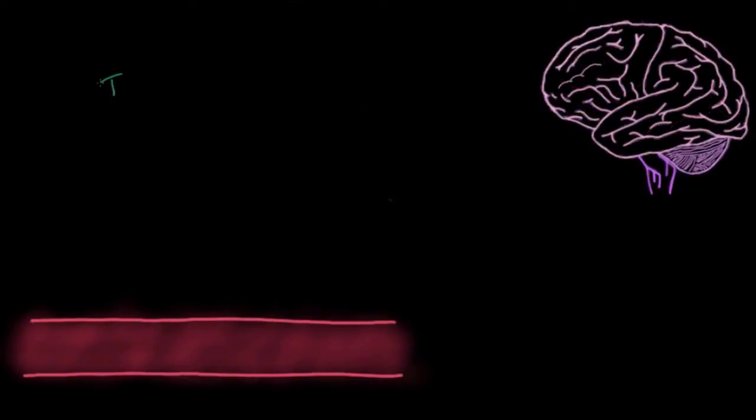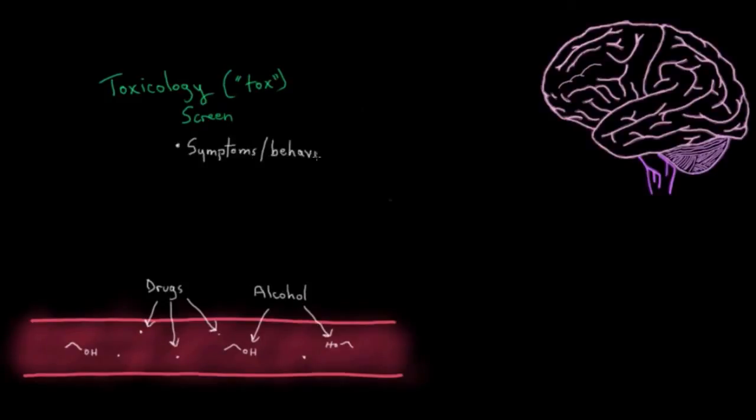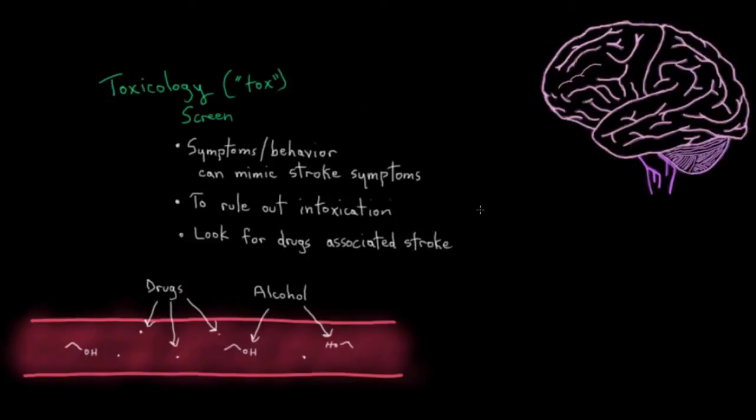The last blood test I'll mention is a toxicology screen or a tox screen. That's probably how you heard it on Law and Order or CSI. This is mainly to identify patients that might be intoxicated with any drug or alcohol and who might be having symptoms or behavior mimicking stroke syndrome. So it's really a test to rule out intoxication or look for any drugs in the blood that might be associated with a risk of stroke. Those are some of the more common blood tests that are done in diagnosing a stroke.